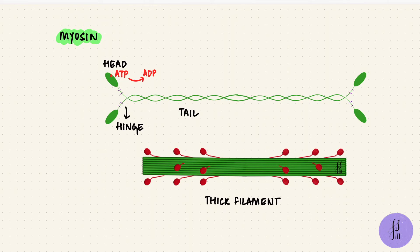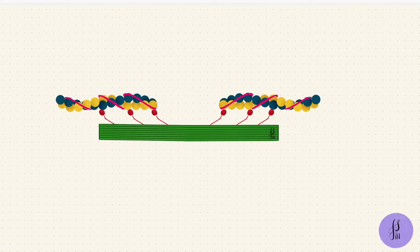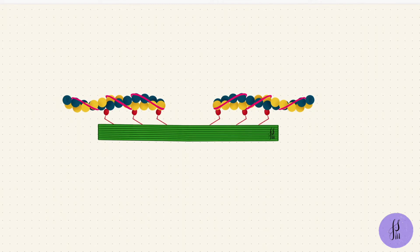Because of the anti-parallel arrangement, the center is bare, having just the tails of the myosin molecules, with the heads angled out towards the sides. These thick and thin filaments work together. The energy from myosin hydrolyzing ATP bends the hinge, which can pull the actin thin filaments inwards. That's how sarcomeres in muscles shorten, contracting the muscle.